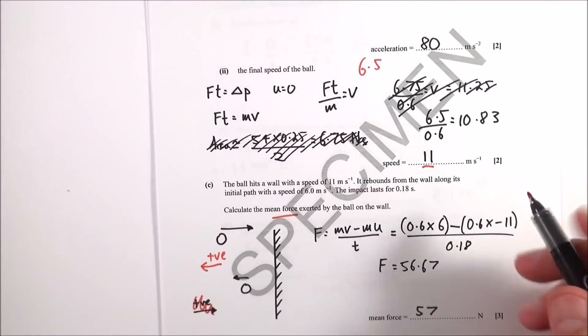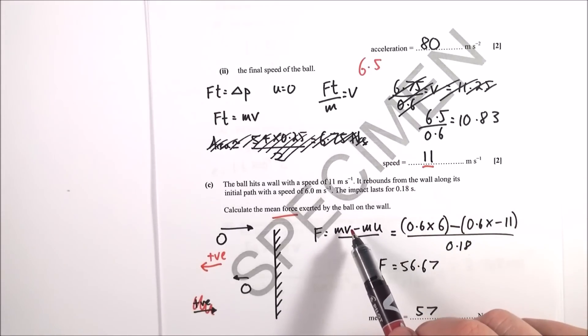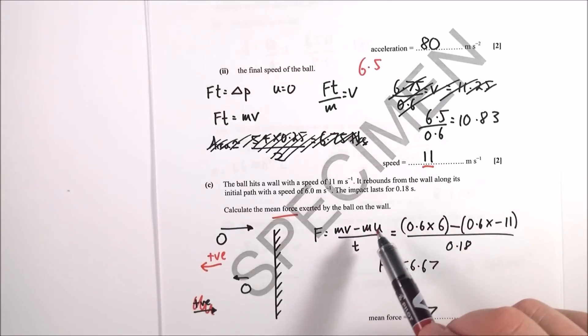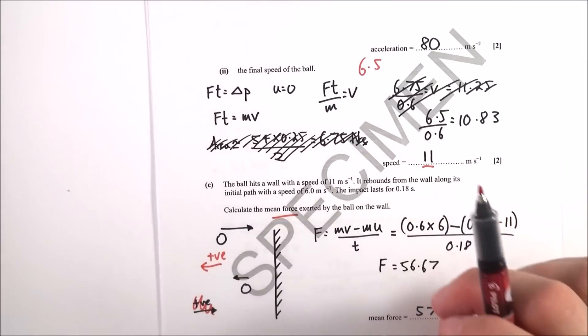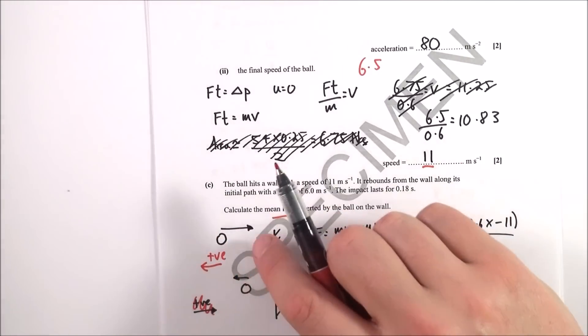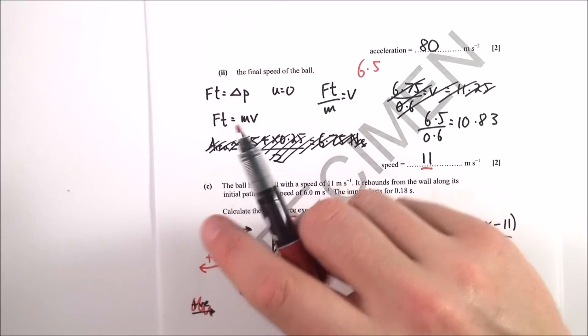So many people will say it's mass times 11 minus mass times 6, and get a force value that's far too small. Just be aware - draw a diagram. It doesn't take long, but it shows you that velocity has changed direction. That's question three.